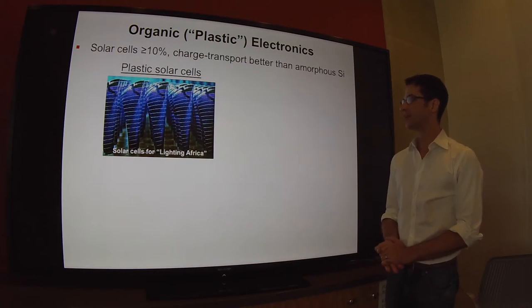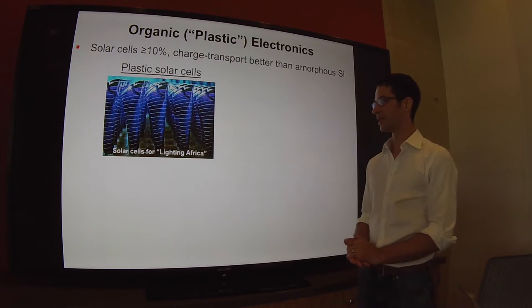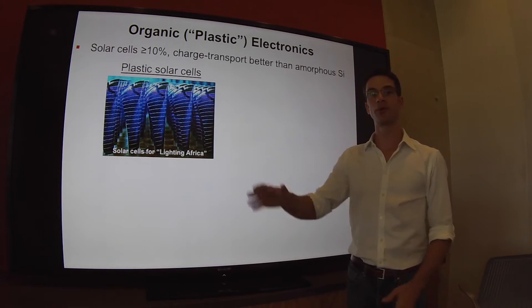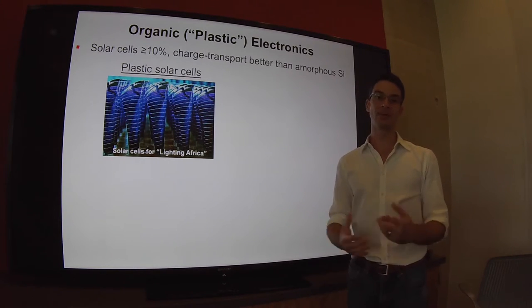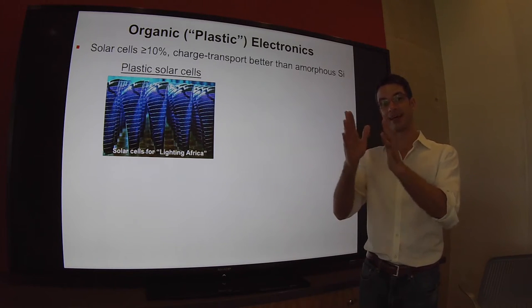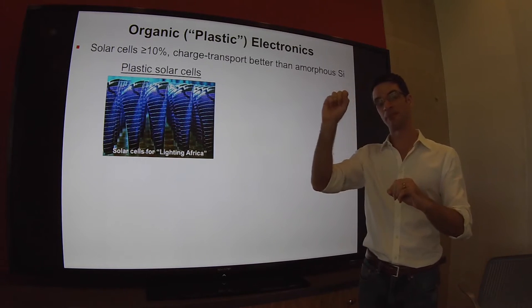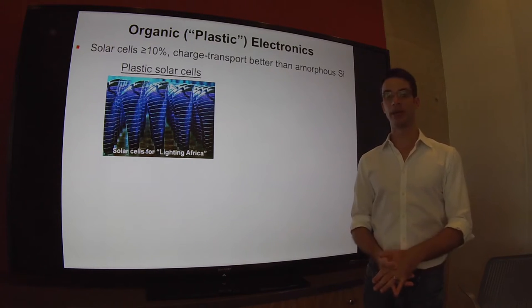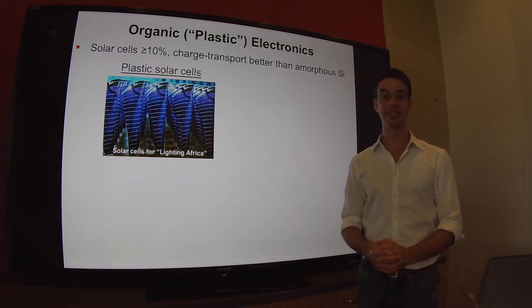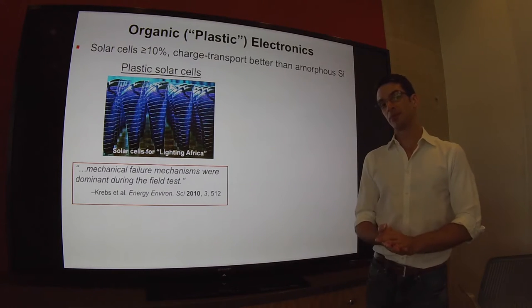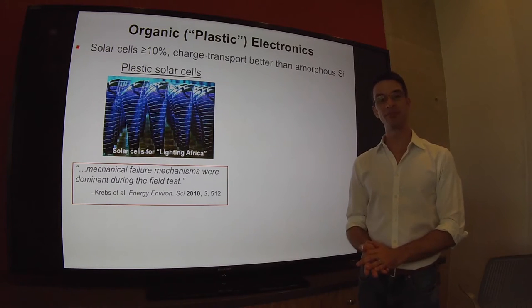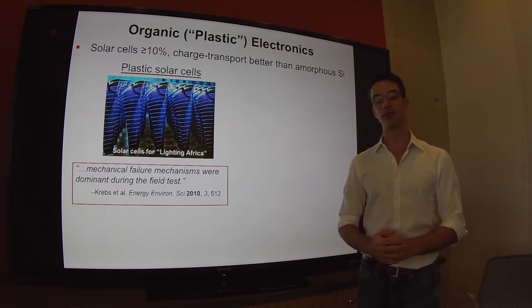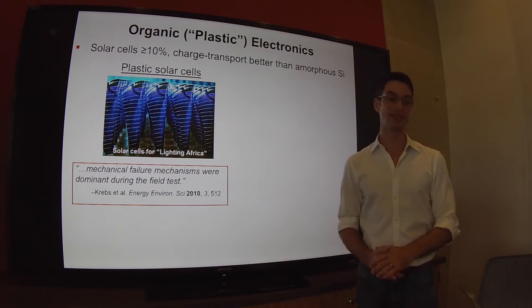This is an image of plastic solar cells produced by Professor Krebs' group at the Danish Technical University. These cells were deployed in rural Africa as part of the Lighting Africa initiative, printed in an 8.5 by 11 inch sheet with LED lanterns so that kids could do their homework and read at night without burning kerosene. However, mechanical failure mechanisms were dominant during the field test. Most devices returned from rural Zambia had evidence of mechanical failure.